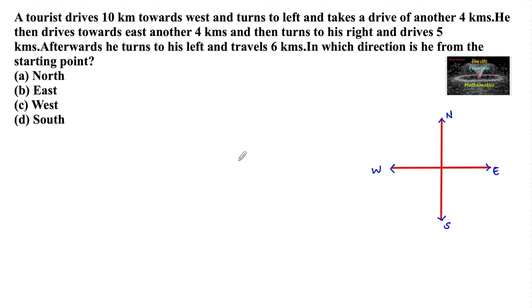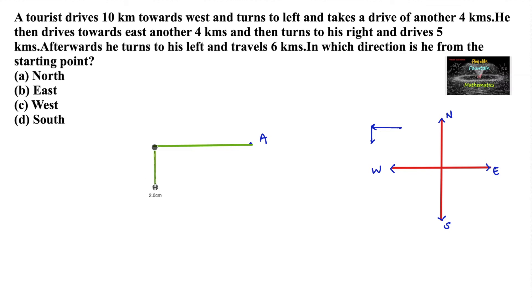Let us assume the tourist's starting point is here, say A. He drives 10 km towards west — towards west means the left side, 10 km. He then takes a drive of another 4 km by taking left. When he is facing the west direction, taking left means he is moving towards the south direction. So he moves south for 4 km.